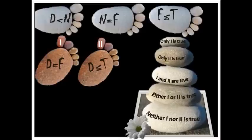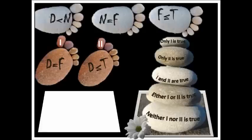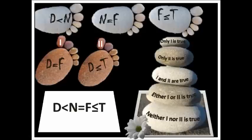Let's work out the solution. Combine the three statements into a single statement: d less than n, n equal to f, f less than or equal to t. Because the first statement ends with n and the second begins with n — combine them. Similarly, the second ends with f and the third begins with f. So the single combined expression is: d less than n equal to f less than or equal to t.